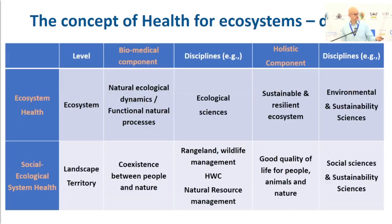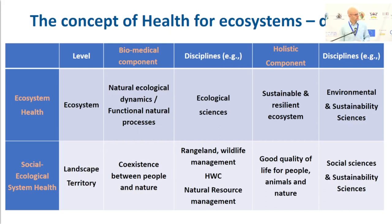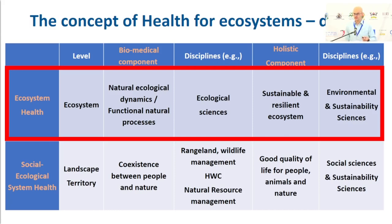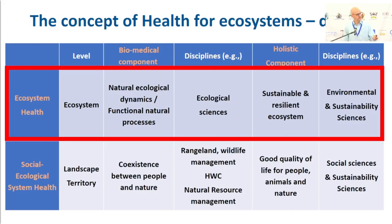I tried to apply that two-component human health concept to ecosystems — these are just ideas, please don't use this as a definition. For ecosystem health, the level of intervention is no longer individual or population but the ecosystem itself. What you want to maintain and nurture are natural ecological dynamics and functional natural processes, drawing on all ecological sciences. Applying the holistic component points toward sustainability and resilience of ecosystems, with associated disciplines in environmental and sustainability science.